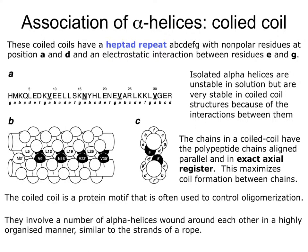Because amphipathic helices have hydrophobics interacting with one another, they form what are called coiled coils. Coiled coils have a heptad repeat, A through G, with nonpolar residues at positions A and D and electrostatic interactions between residues E and G. In a coiled coil sequence, the single alpha helix alone is unstable, but it becomes very stable in a coiled coil because of interactions between the hydrophobic residues at the A and D positions.